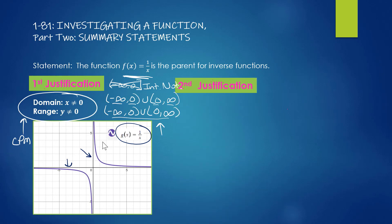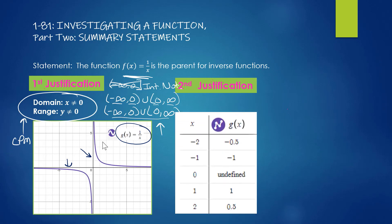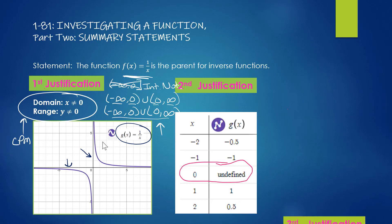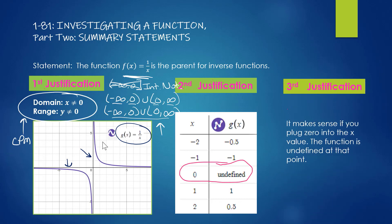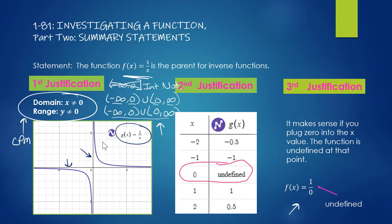Justification two: the table shows the function is undefined at x = 0, confirming the asymptote. Justification three: algebraically, f(0) = 1/0, which is undefined. These three justifications — graph, table, and equation — summarize the inverse function. If you have any questions, leave them in the comments and I will get back to you. See you in the next video.